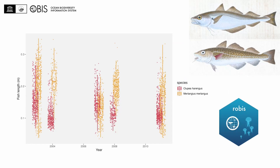The result of all this is that we can easily perform data analyses across the interoperable datasets which have been integrated into the OBIS data system. The robis R package makes pulling data from the OBIS database trivial, and it takes just a few lines of code to produce a graph like this one on fish links.